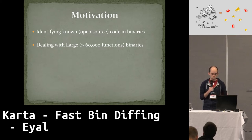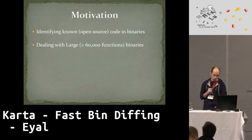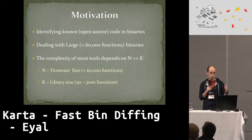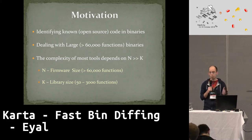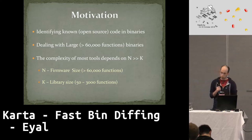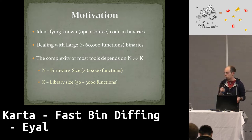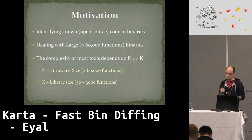We need another solution — something that will fit the size of the open source and not the size of the firmware. Usually the complexity of most tools depends on N, which is the size of the firmware and is pretty large. We want a tool that depends on K, the library size. Zlib has roughly 100 functions, so it should find it fast and it shouldn't take two hours and crash.